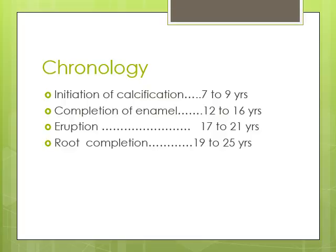The initiation of calcification in the third molar starts at seven to nine years of age, so we cannot see the tooth bud before this age. The enamel completion takes place at 12 to 16 years of age, and we can see the eruption in the oral cavity at 17 to 21 years of age. There is lots of variation in the eruption age of these third molars.